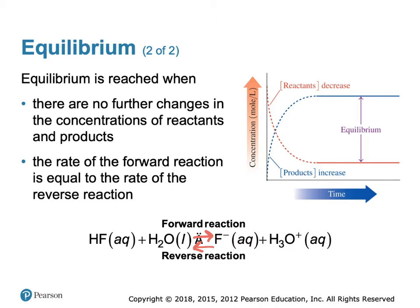In the forward reaction, you have hydrofluoric acid, which is your Bronsted acid, reacting with water, which is a Bronsted base. Hydrofluoric acid is transferring a hydrogen to water, forming the conjugate base F⁻ and the conjugate acid H₃O⁺, or the hydronium ion.